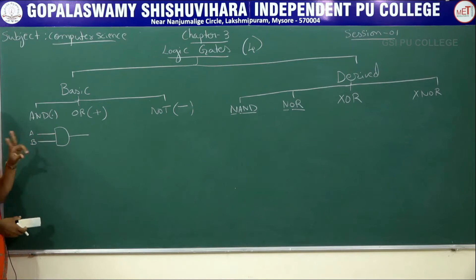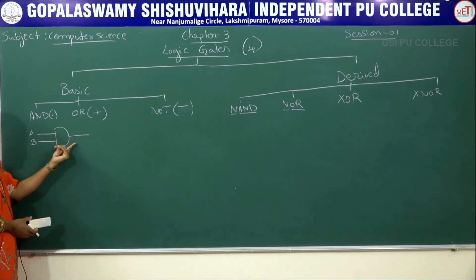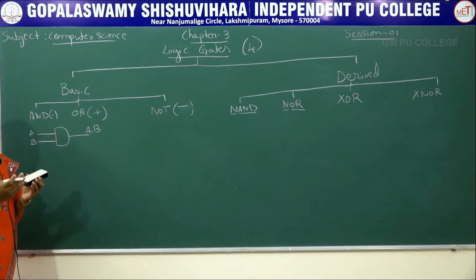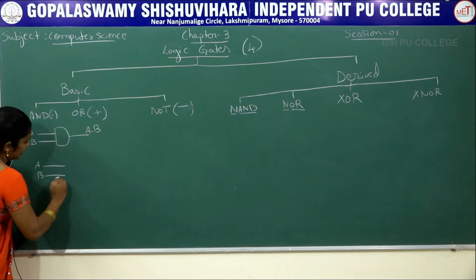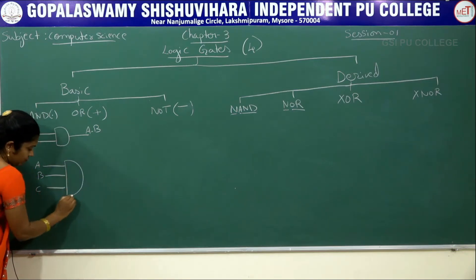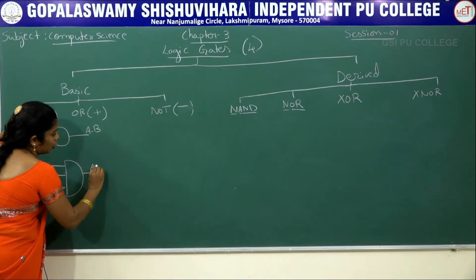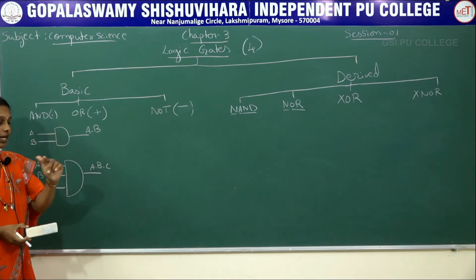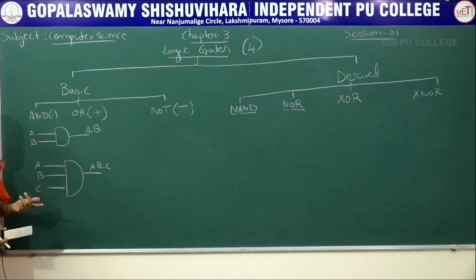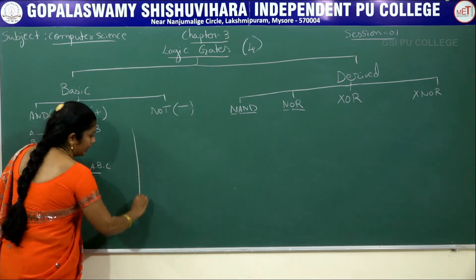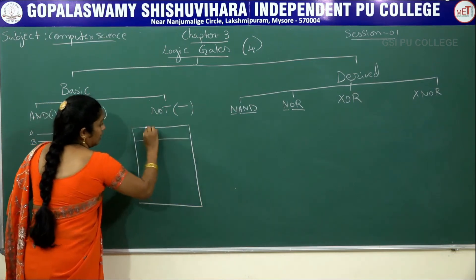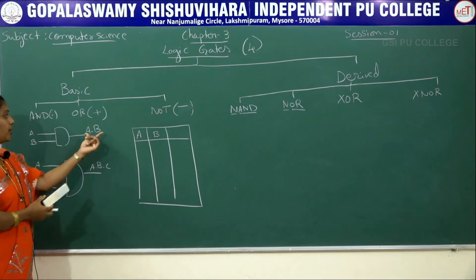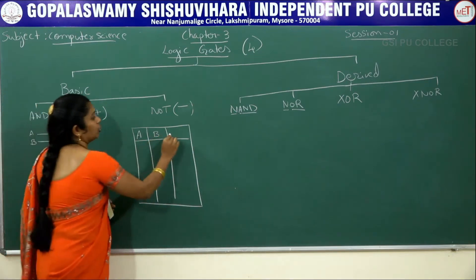For two variables A and B, the AND gate symbol is the D-shape and the output is A dot B. For three variables A, B, and C, we represent them with the D-shape and the output is A dot B dot C. This symbol is used to represent two variables and this symbol is used to represent three variables. Now how to write the truth table — for two variables we get totally four combinations.